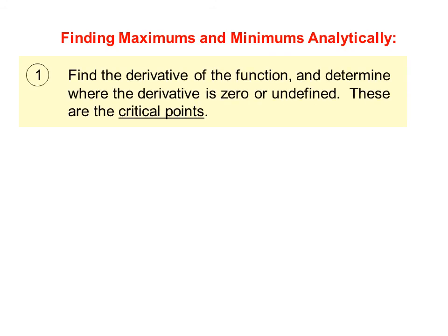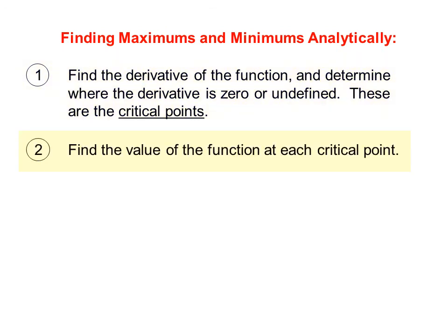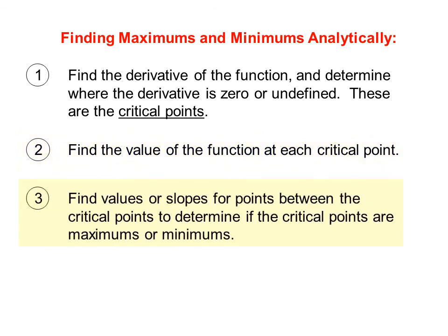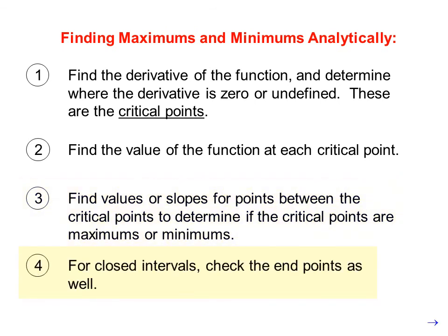Finding maximums and minimums analytically: Step 1 — find the derivative and determine where it is zero or undefined; these are the critical points. Step 2 — find the value of the function at each critical point. Step 3 — find values or slopes for points between the critical points to determine if they are maximums or minimums. Step 4 — for closed intervals, check the end points as well.